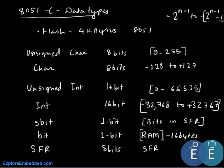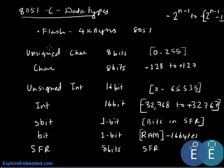Ports 0, 1, 2, and 3 are special function registers, and apart from those, various other registers can also be accessed with the SFR data type. We will be using all these data types when programming the 8051 in C.